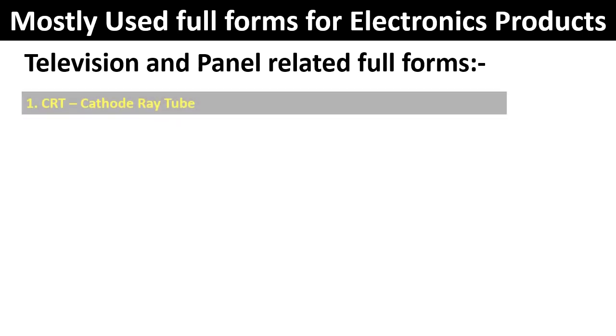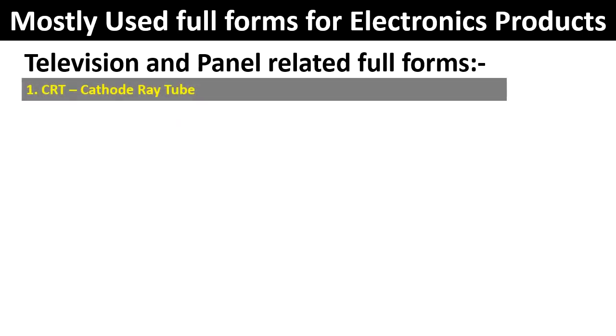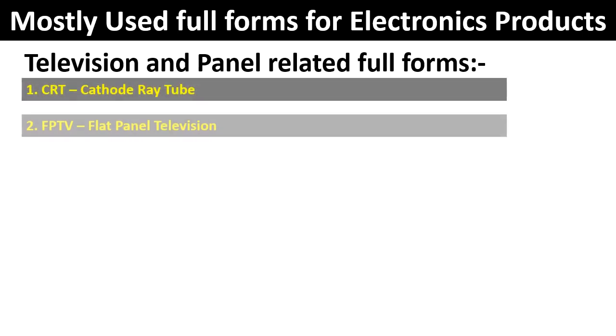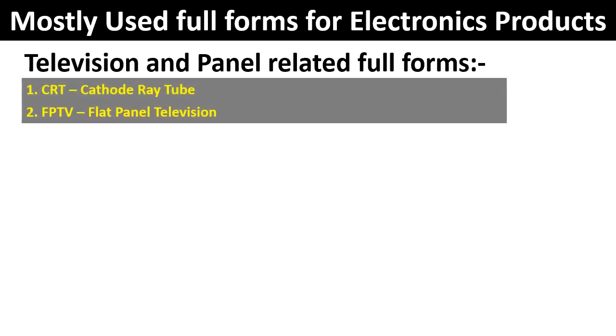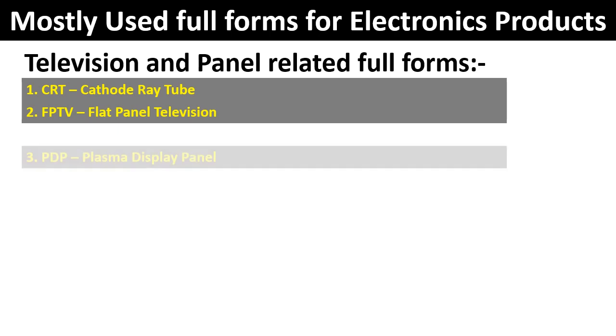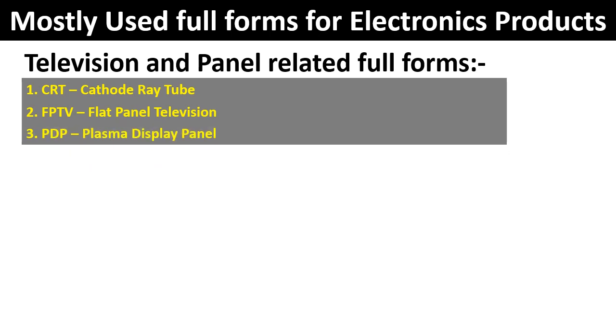10 Full Forms: Television and Panel Related. 1. CRT — Cathode Ray Tube. 2. FPTV — Flat Panel Television. 3. PDP — Plasma Display Panel.